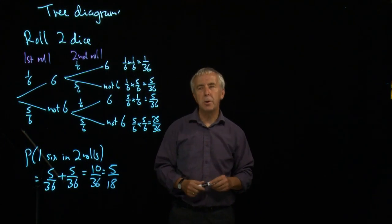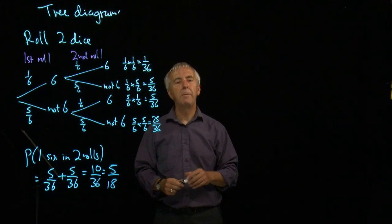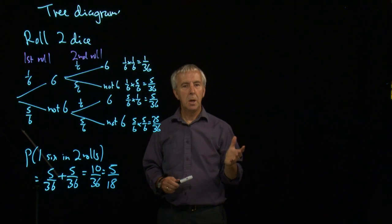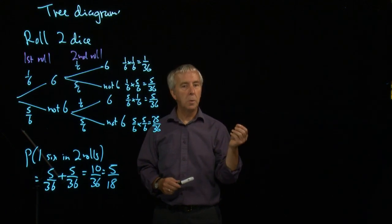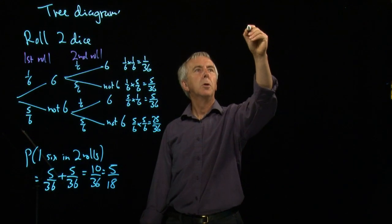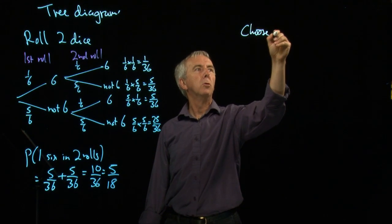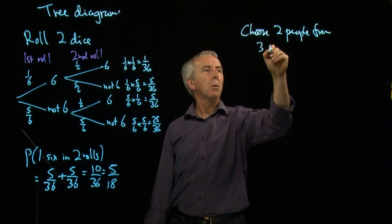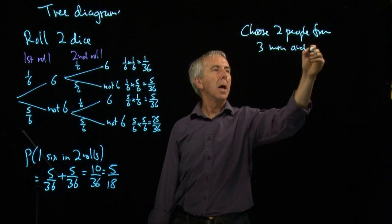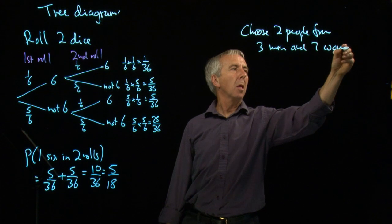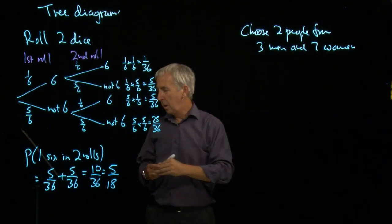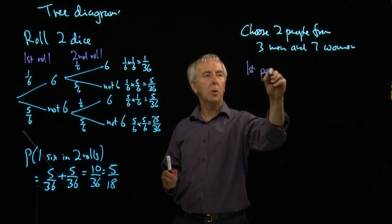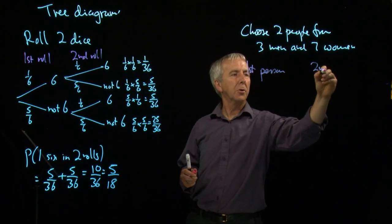Now let's look at a slightly different scenario. Suppose we have ten people, three men and seven women, and we want to choose two people, a pair from that. Let's look at the first choice, the first person we choose. Then we'll do the second one.